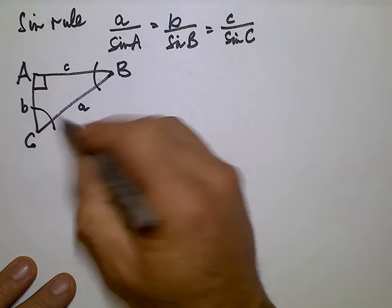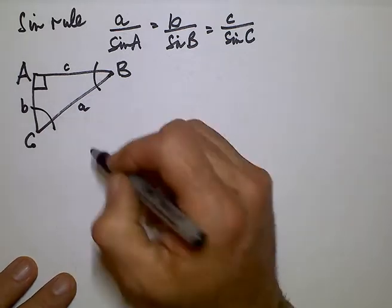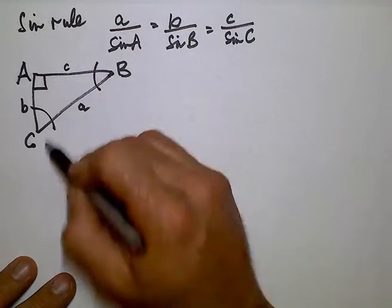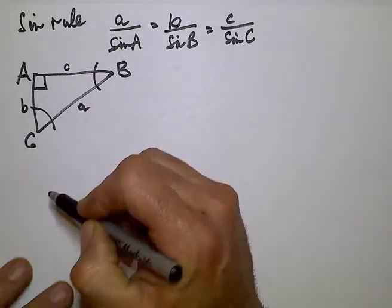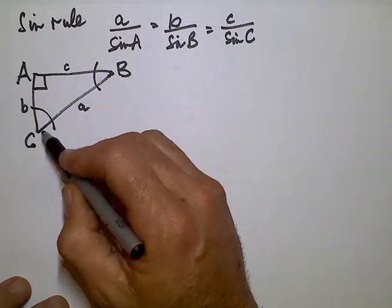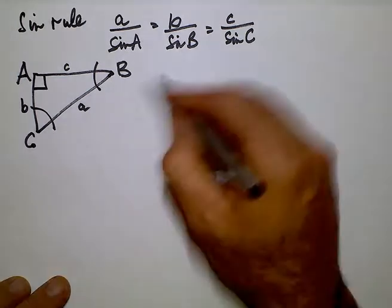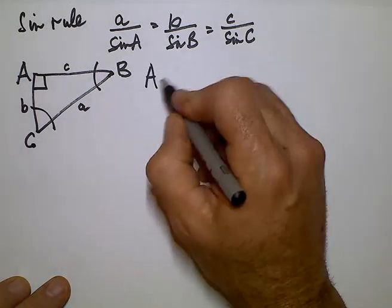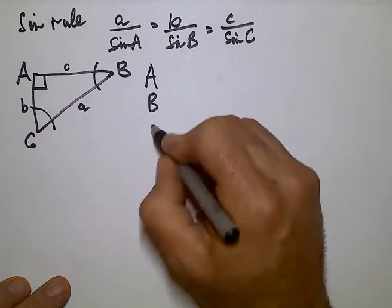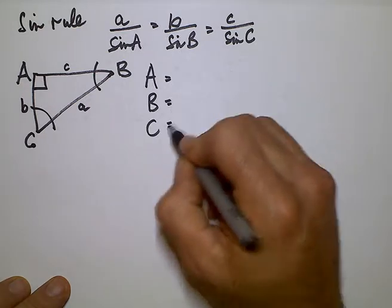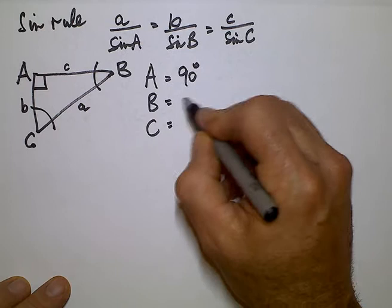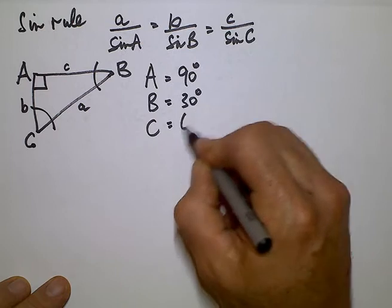A practical application of the Sine Rule is, say, making a shelf bracket from a length of steel of set length and given angle. So we're going to call angle A, B, C 90, 30 and 60 degrees.